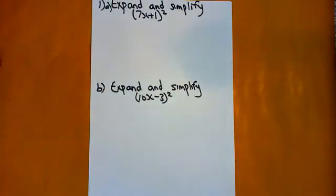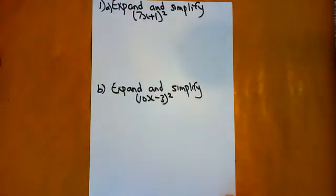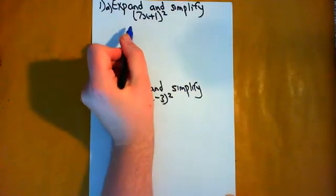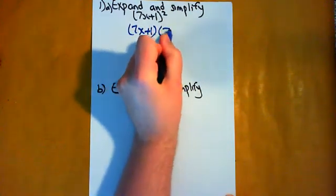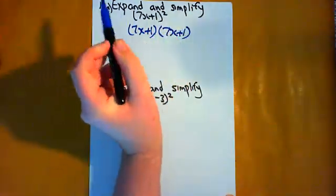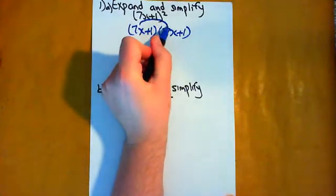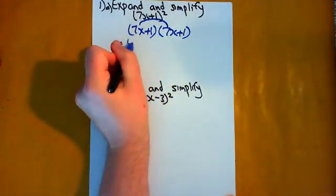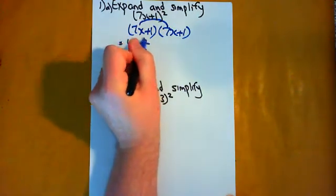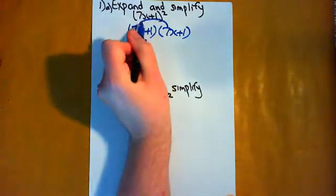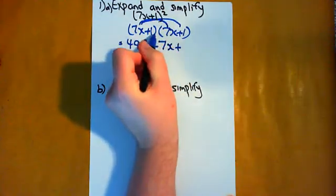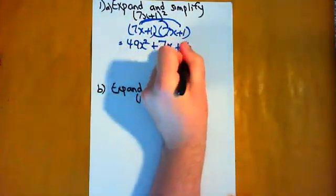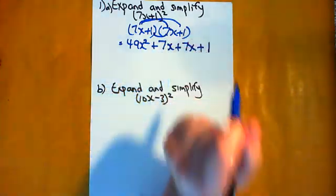So we have 7x times 7x is 49x², plus 7x times 1, which is plus 7x, plus 1 times 7x, which is 7x, plus 1. Now that's the expand bit done.